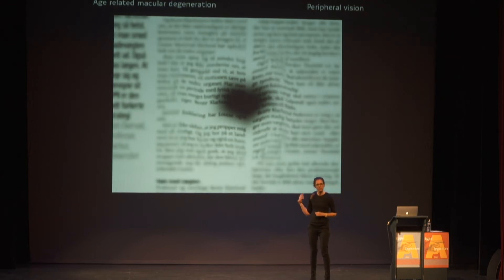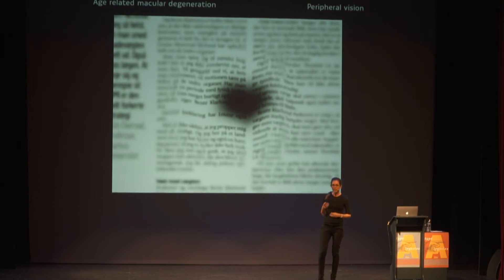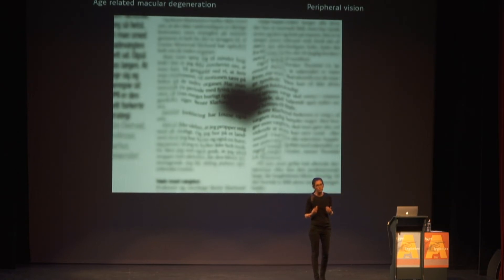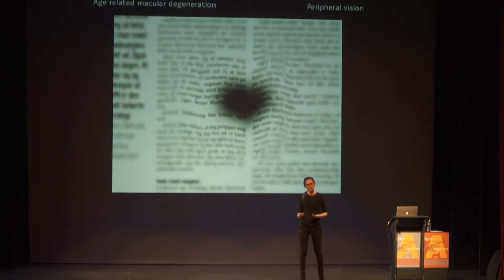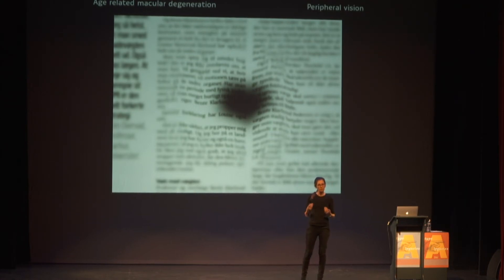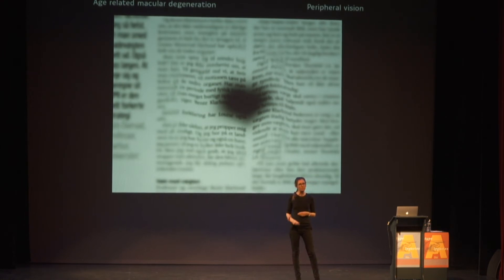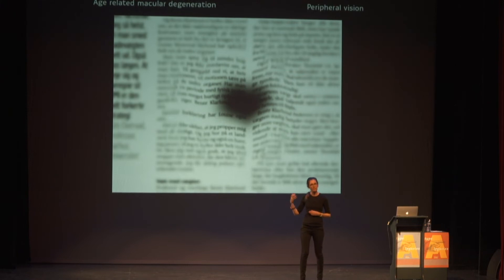One of these is called AMD, and is something that quite a lot of older people end up suffering from. If you suffer from one of these diseases and you still want to be able to read, you will have to teach yourself to read using your peripheral vision. Therefore, we need to make type legible in the peripheral vision.